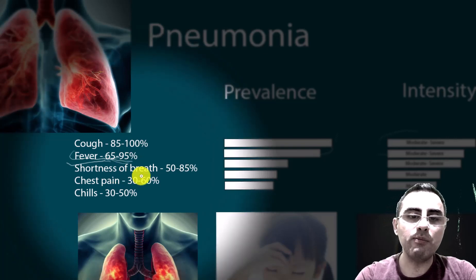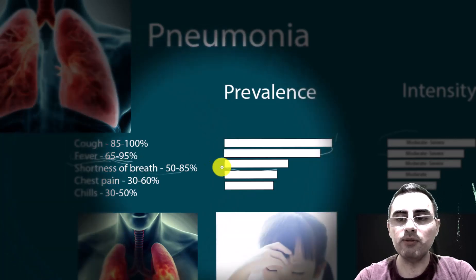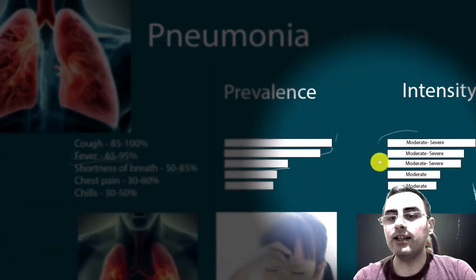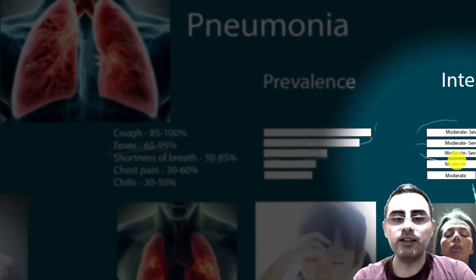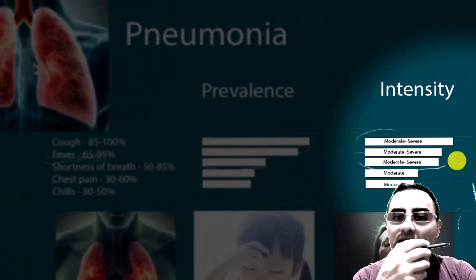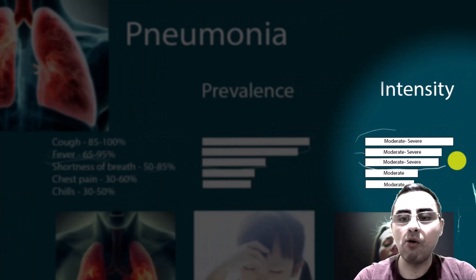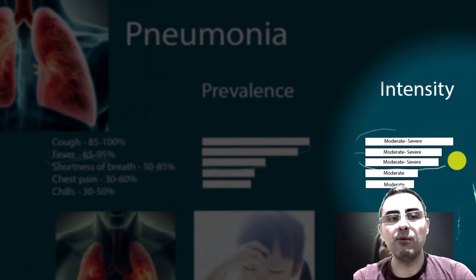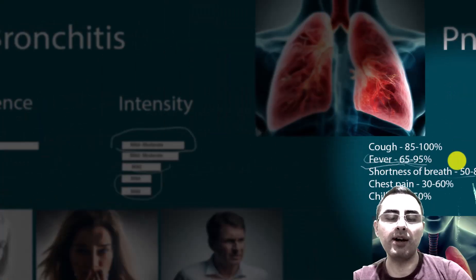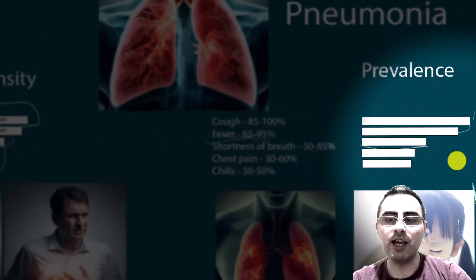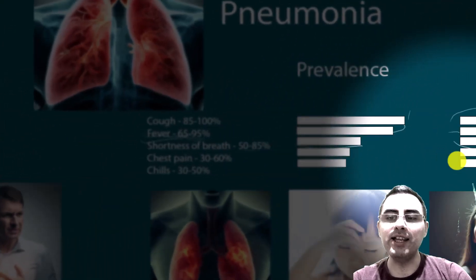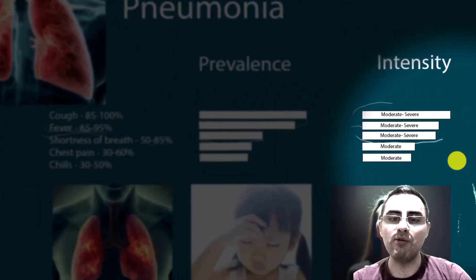Shortness of breath is also a common symptom in pneumonia, and it is moderate to severe in intensity. The person has a strong sense of being ill, while in the case of bronchitis, the person feels more energetic and has less of a sense of illness.